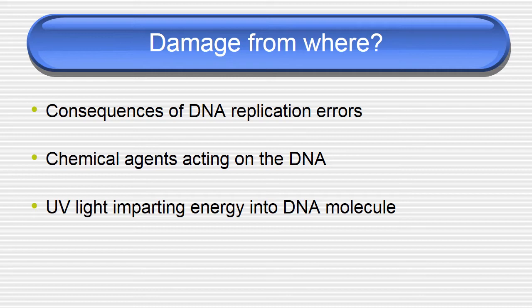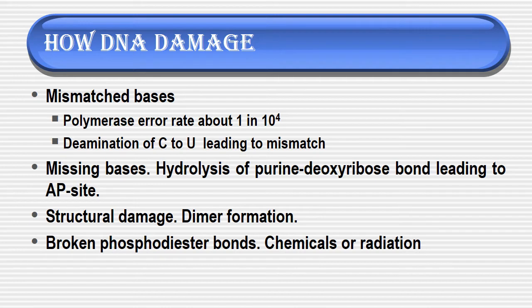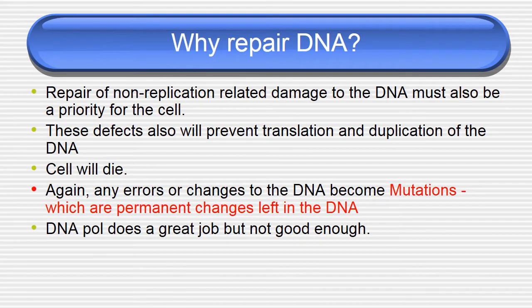The consequences of DNA replication errors include damage from chemical agents acting on DNA, UV light imparting energy into DNA molecules, and spontaneous changes. DNA damage by mismatched bases may arise from polymerase error rate of about 1 in 10^4, deamination of cytosine to uracil leading to mismatch, hydrolysis of purine deoxyribose bonds leading to AP sites, then structural damage such as dimer formation, broken phosphodiester bonds, or chemical/radiation-caused damage.